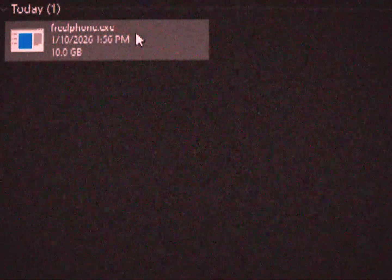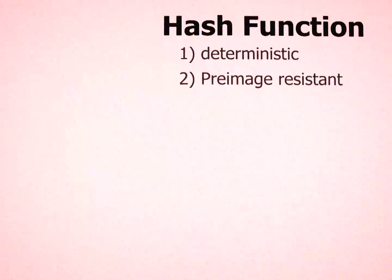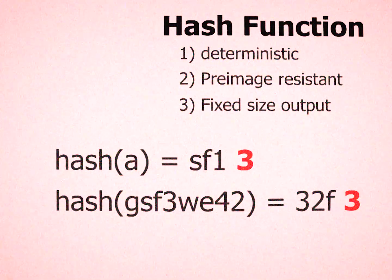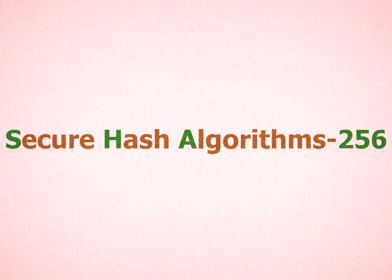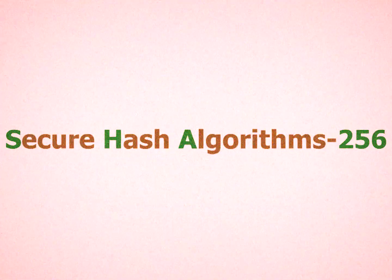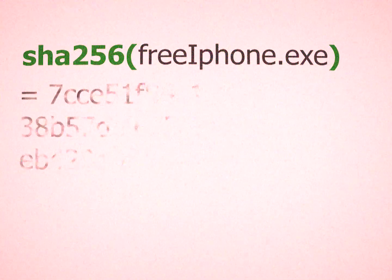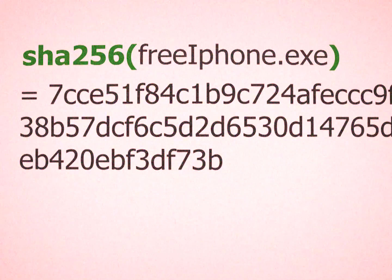Now, we don't just use hashing for protecting passwords. Sometimes we use them for validation. Let's say you downloaded a big file from the internet — how could you know that the file is unchanged? There comes another important property of a hash function: it should produce a fixed-size hash for any input. SHA-256 is a real-world hashing algorithm that produces a fixed 256-bit hash. We can validate our download just by checking the hash. This is known as a checksum.